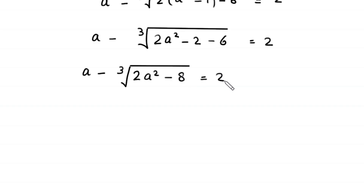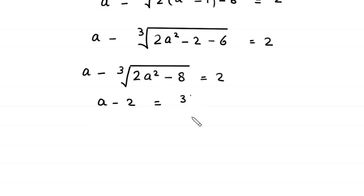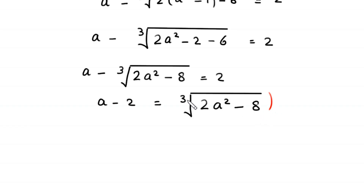Next, negative 2 minus 6 becomes negative 8, so we have a minus cube root of (2a squared minus 8) equal to 2. We move 2 to the left hand side and the cube root term to the right hand side, giving us a minus 2 equals cube root of (2a squared minus 8).